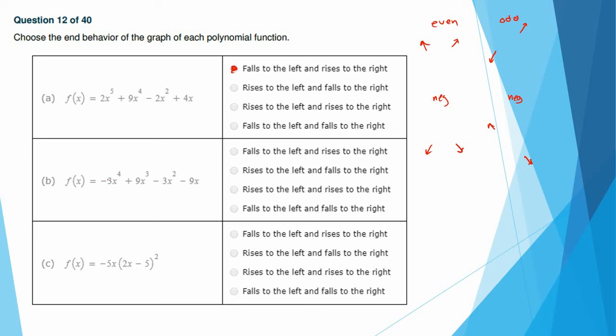Here we have 4. So it's even, but it's negative. Even, negative, down, down. Falls, falls. Here we have x to the first, and we've got x squared, which means it's odd. 2 plus 1 equals 3. We add up all of the exponents. So 1 plus 2 is 3. Odd negative. Odd negative means it's going to rise left, fall right. Rise left, fall right.